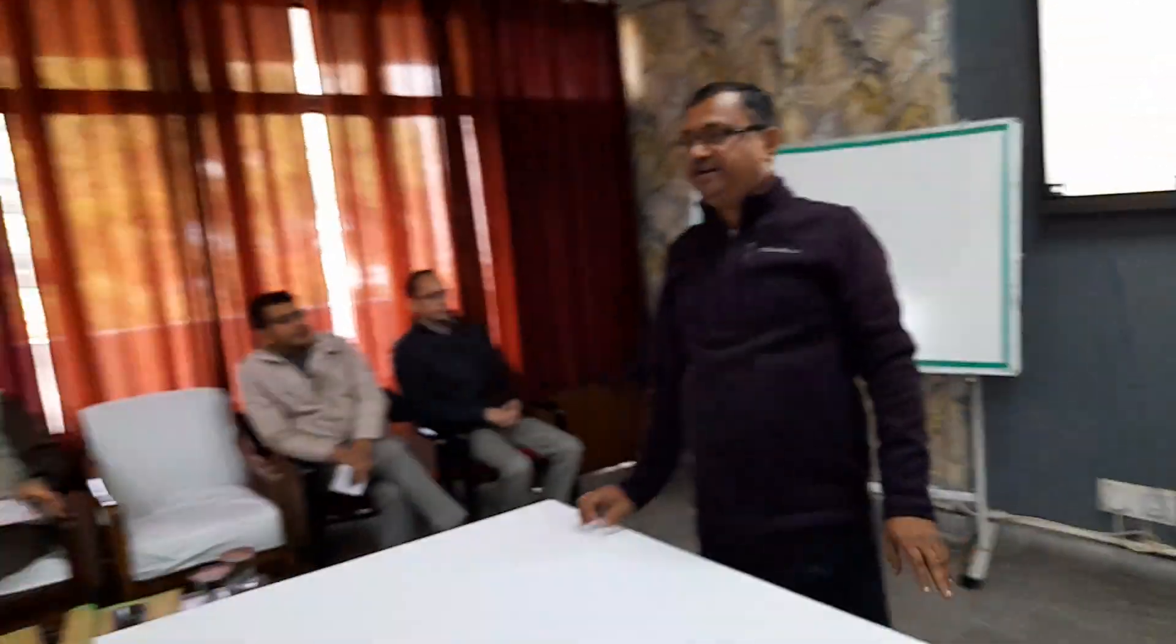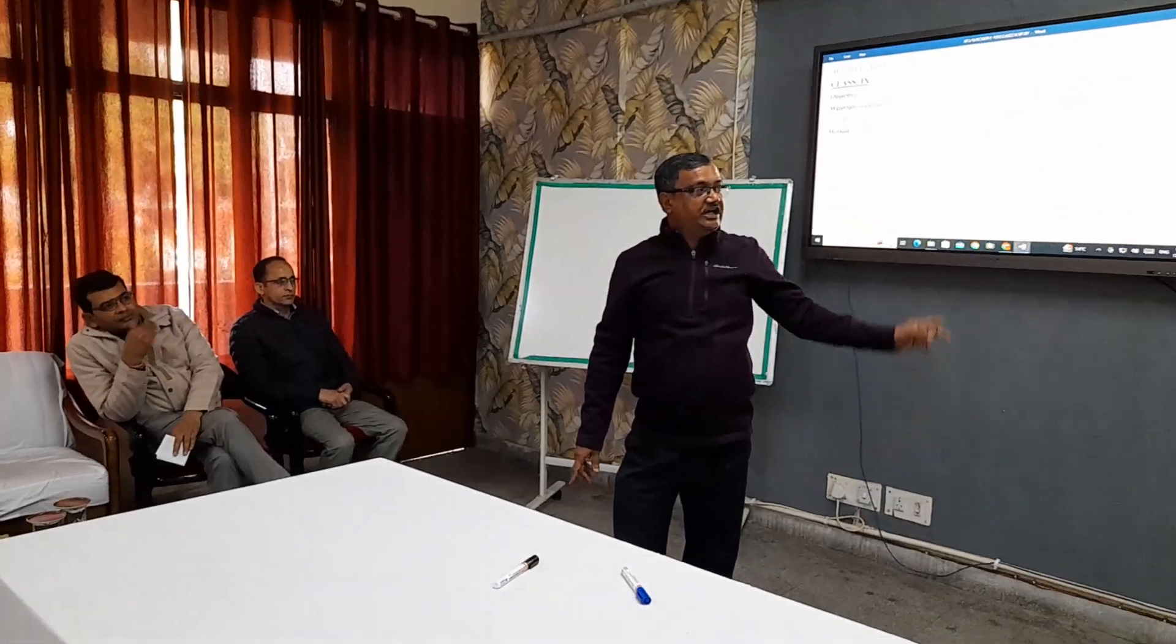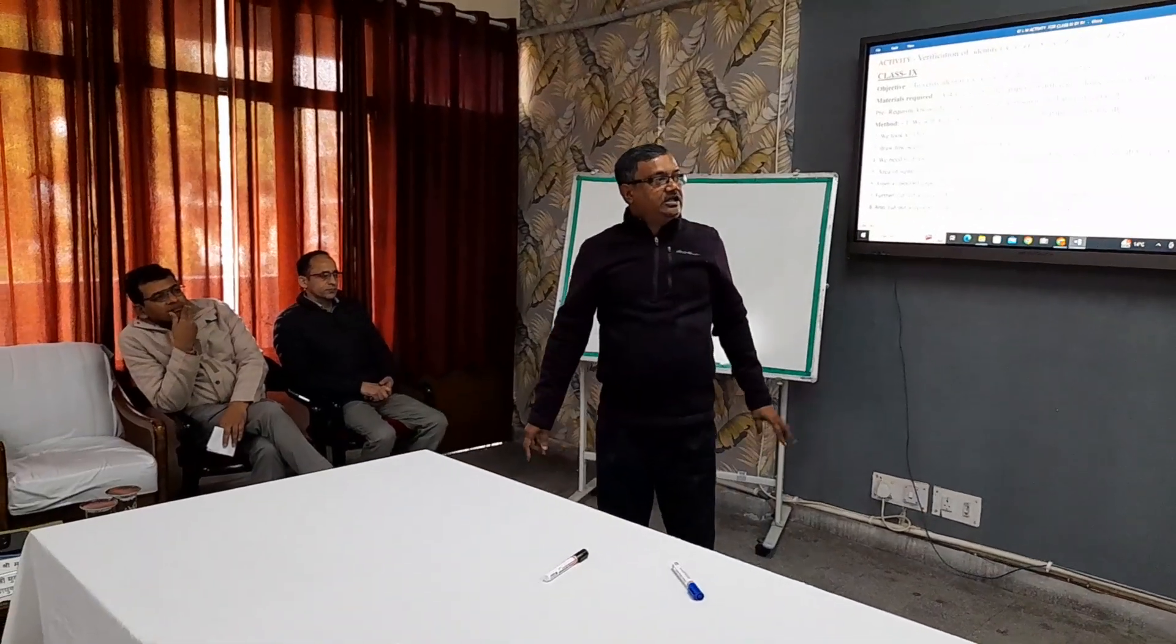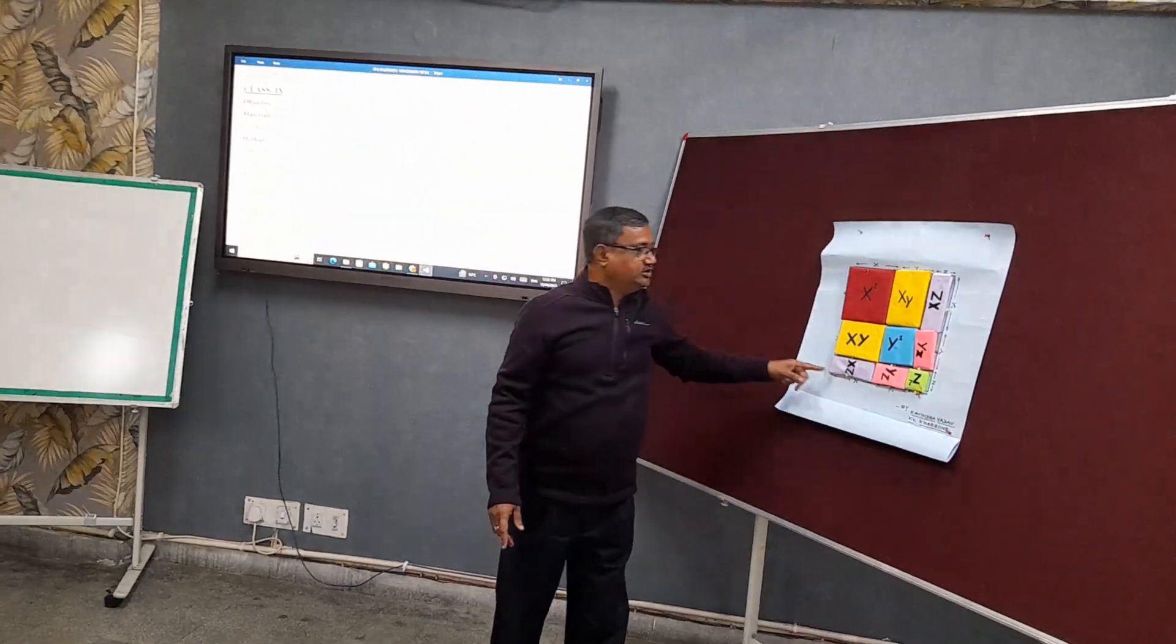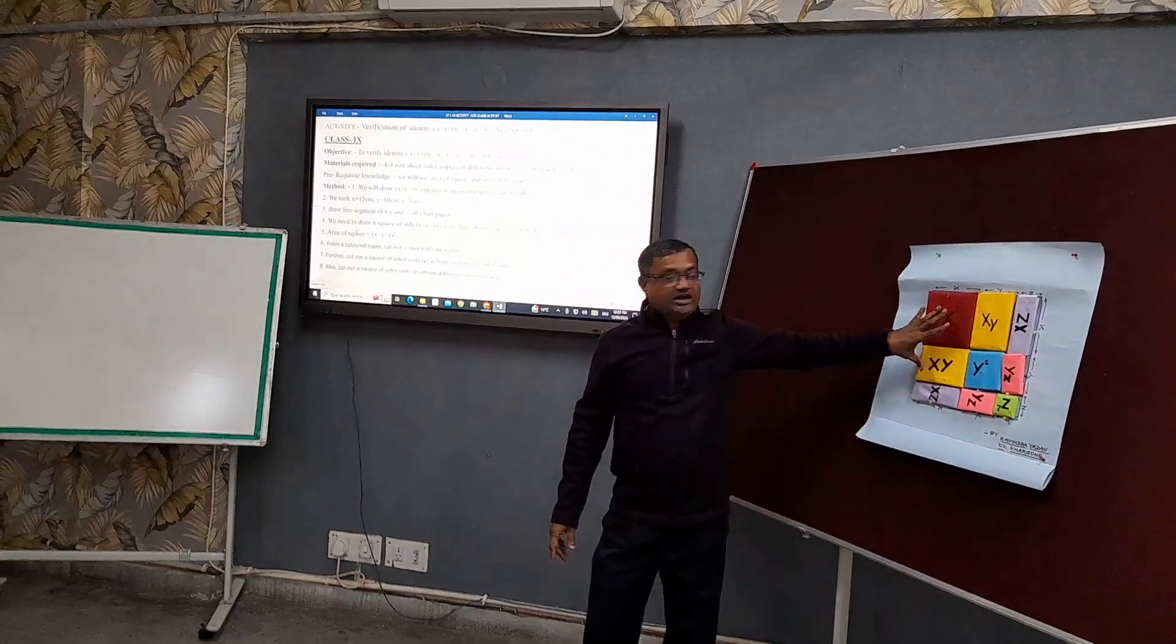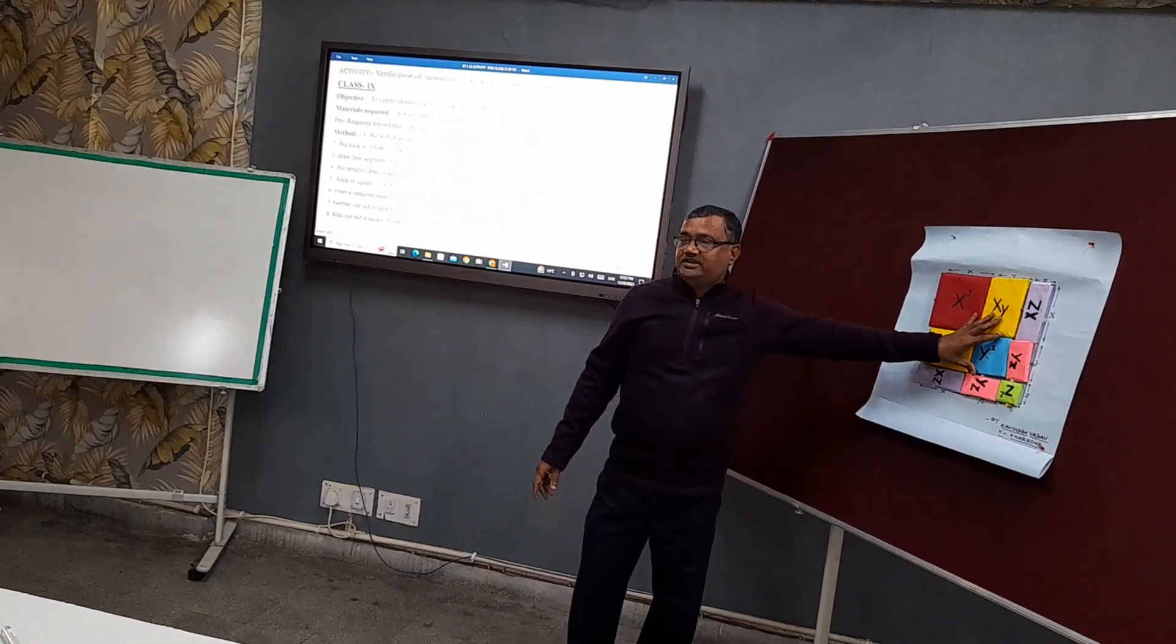After rearranging the squares and rectangles, we find that the area covered by x plus y plus z whole square is completely covered by the different squares and rectangles.